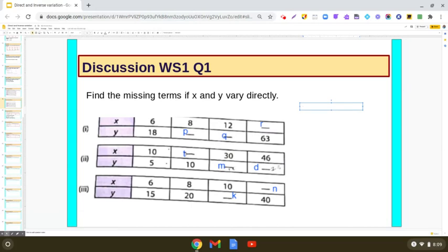we will be writing as x and y vary directly, so x upon y is equal to constant, that is k.